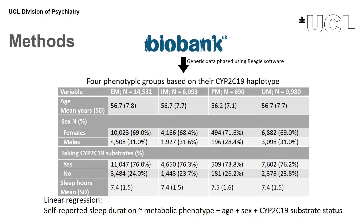Many of the studies that have investigated CYP450 pharmacogenetics have been limited by small sample size. We have made use of UK Biobank, a large prospective cohort study that recruited around half a million participants. We extracted the genetic and clinical data for all participants taking antidepressants, which amounts to over 31,000 individuals. We phased the genetic data using Beagle software to allow us to allocate individuals to one of the four phenotypic groups based on their CYP2C19 haplotype.